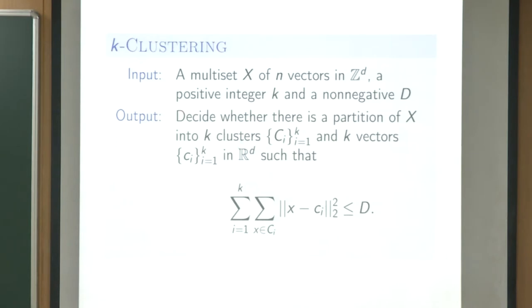The problem is formally defined as follows. We're given a multiset X of n vectors in Z^d — Z means integers, which is important for our study. We're given how many clusters there should be, and we're given a cost bound D, which we want to verify: can we fit our clusters into this cost bound?